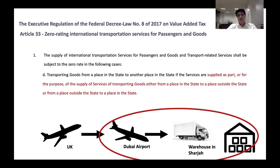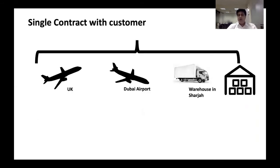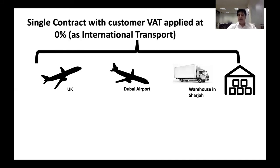Let's understand with examples. If I have a shipment as a courier from UK and my contract says deliver it to my Sharjah warehouse — a single contract from UK airport to warehouse in Sharjah — then the whole leg of the transaction is charged at zero rated. It qualifies as part of international transport because it is a single contract with the customer.